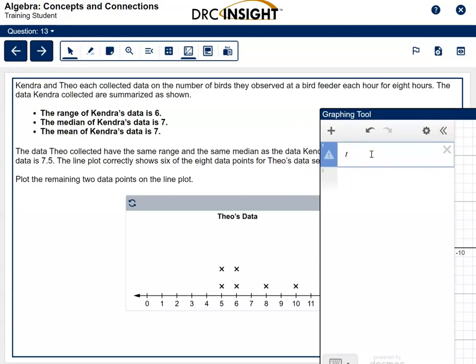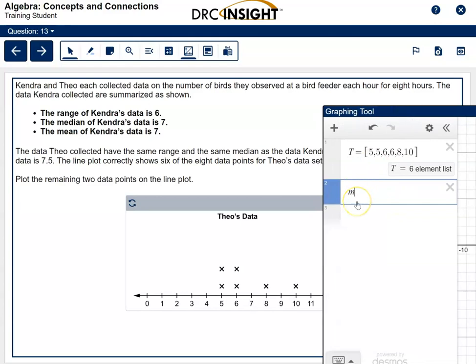The first thing I'm going to do is create a data set for Theo. Let's call it T. I think I'll do capital T equals. So any letter you want is fine, but I'm going to use T for Theo. Then put an equal sign and then a square bracket, and then you're going to type in the numbers that we already have for Theo. Now, Theo has 5, 5, because he has two 5s. He has a 6 and a 6. He doesn't have a 7, but he has an 8, and he has a 10. And he has 6 elements in his list. We don't know how many elements he's supposed to have.